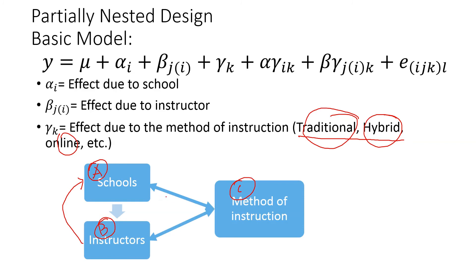If you write that model, alpha i is the effect of school, beta j is the effect of instructor, and that is nested in the school. Then the method of instruction, which is not nested, is just a regular factor. So alpha-gamma can be crossed, and also beta-gamma can be crossed. However, alpha-beta cannot be crossed because they're nested, and then you have the experimental error.